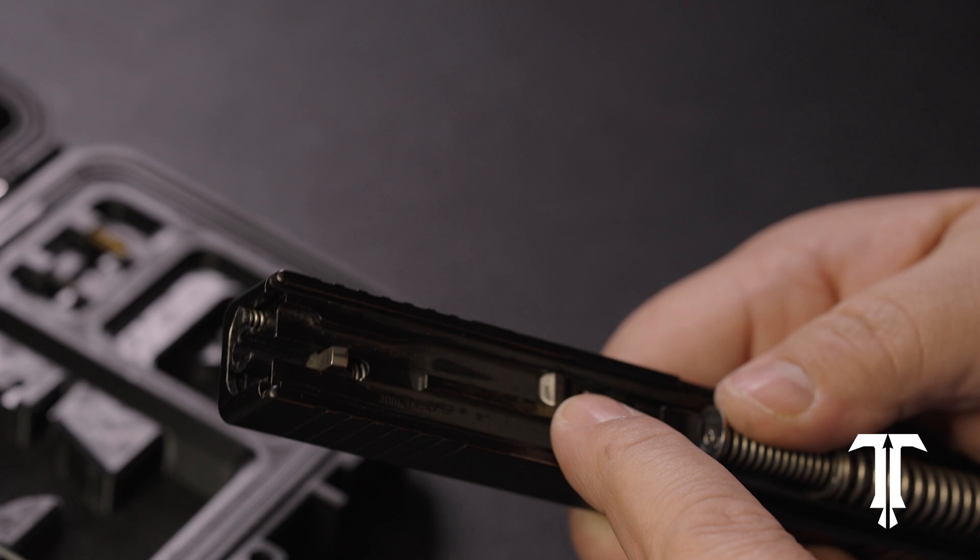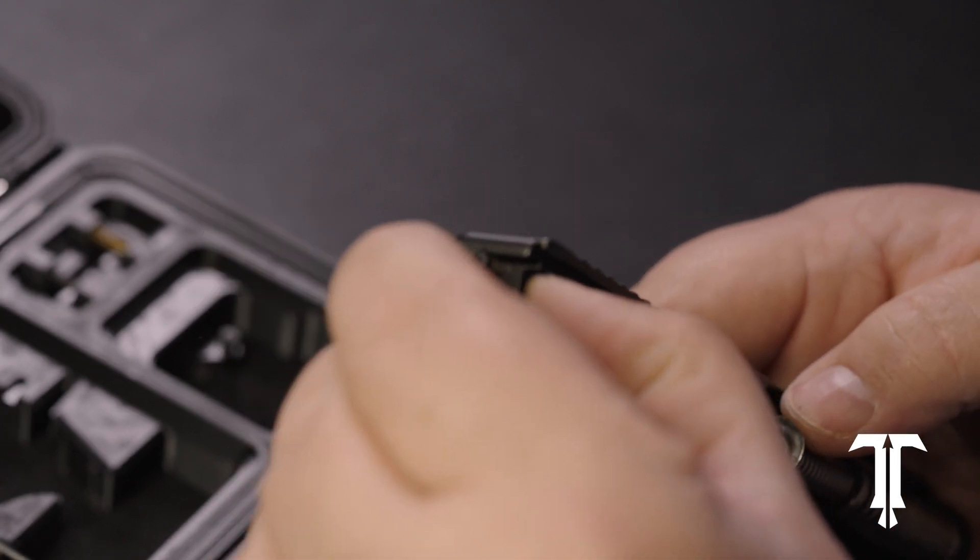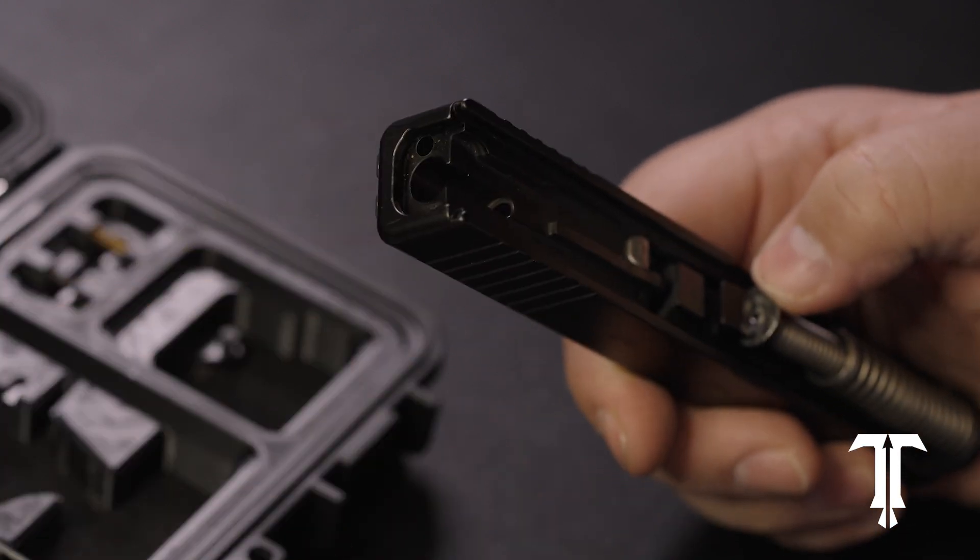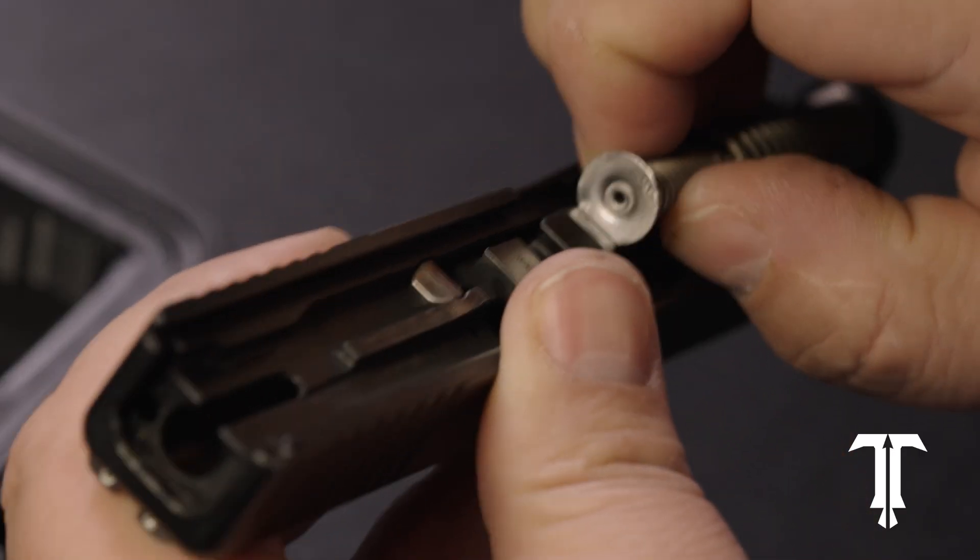To change the firing pin safety spring, you first take out the striker, then remove the extractor tension rod, and dismount the main recoil spring.